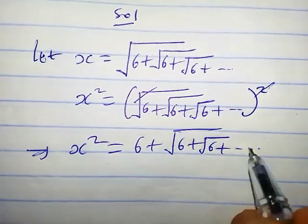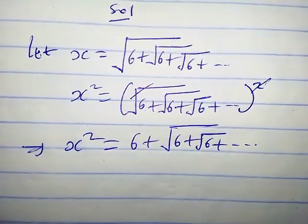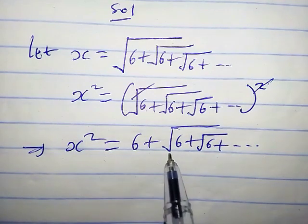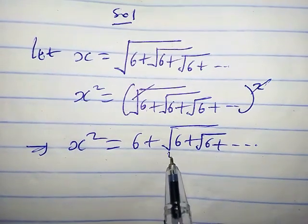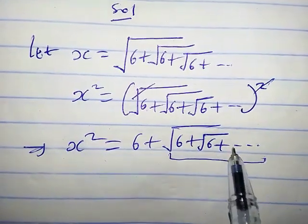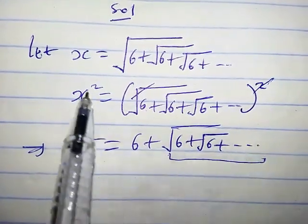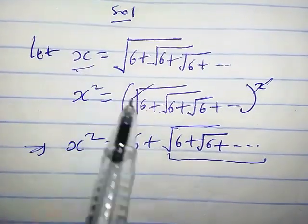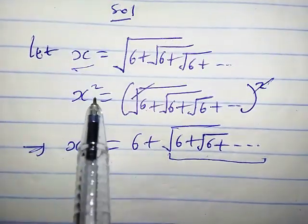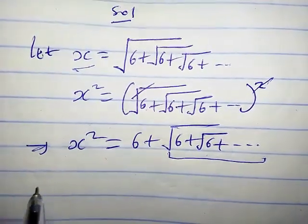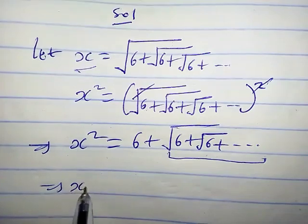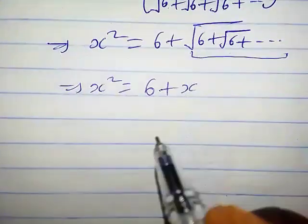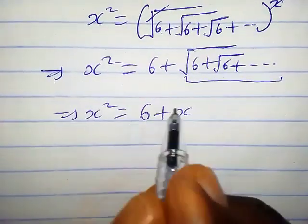Now you will observe that this expression — square root of 6 plus square root of 6 and so on — is exactly what we defined as x. So we replace it with x, giving us x squared equals 6 plus x.